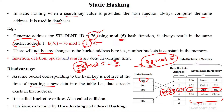Now one more value needs to be stored in the same bucket, but this is not allowed because the bucket already has data. The bucket is overflowing — there is no sufficient memory to store the 88th student, which would be the second record in bucket number 3. This kind of issue is called collision.